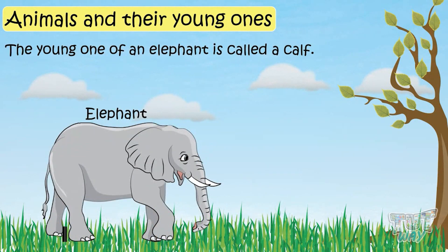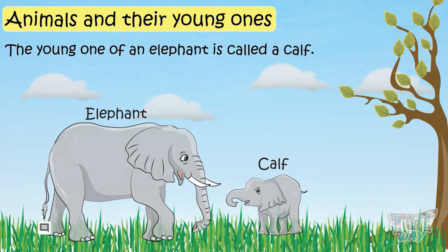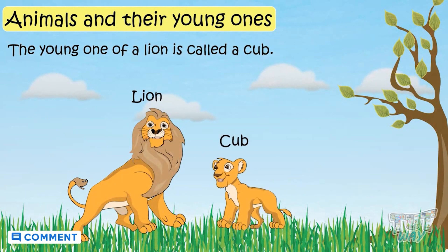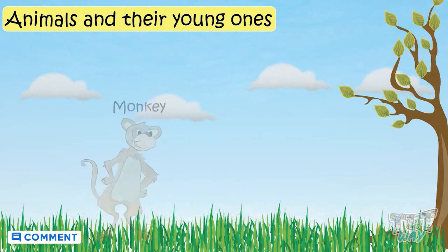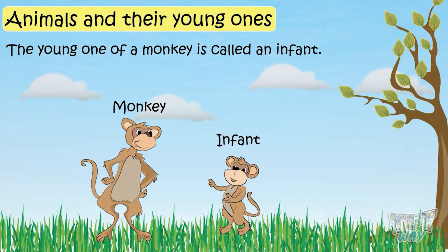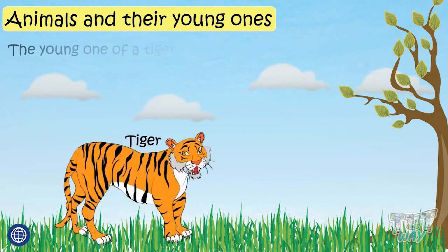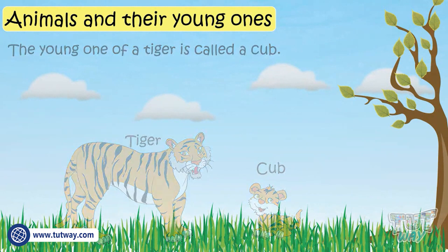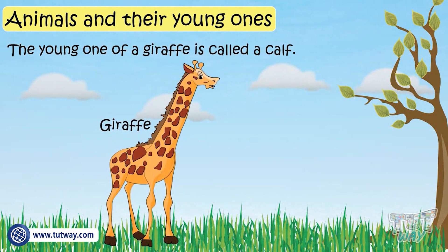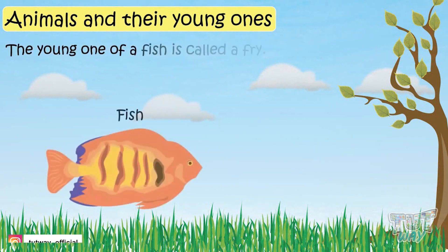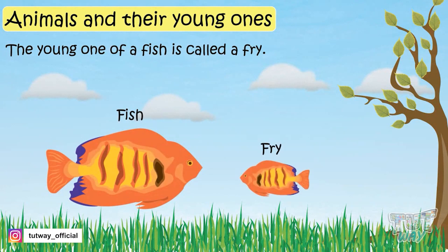An elephant's young one is a calf, a lion's is a cub, a monkey's is an infant, a tiger's is a cub, a giraffe's is a calf, and a fish's young one is called a fry.